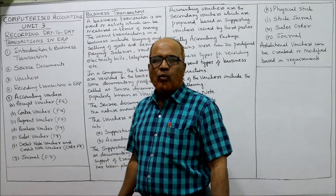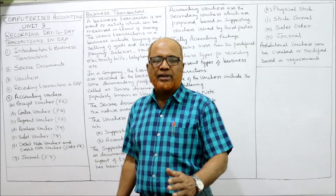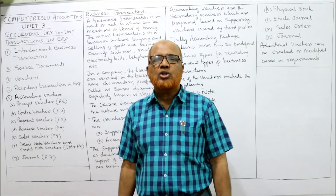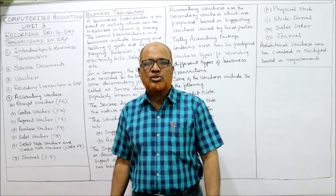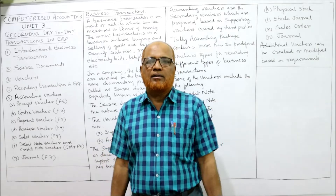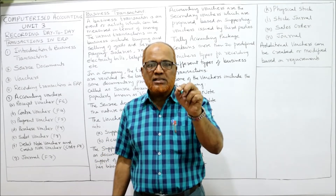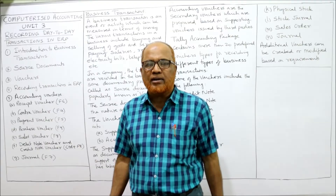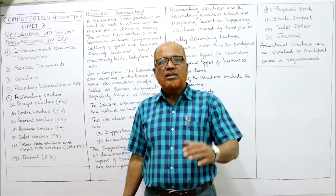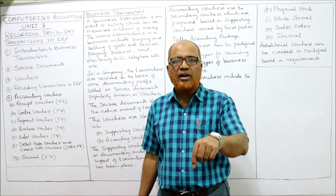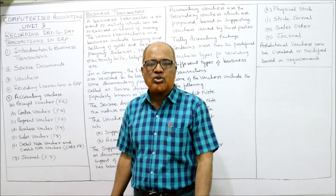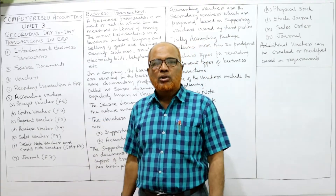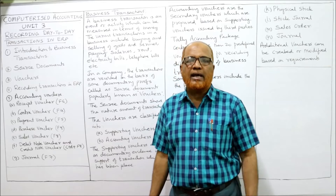Now I'm going to start from the beginning. The contents of unit number three — recording of business transactions in ERP — are: first, introduction to business transactions, because only business transactions will be recorded; the first step in accounting is the recording of transactions. Second, source documents: there should be some evidence for transactions, and without evidence we cannot record them. The evidence comes from source documents.